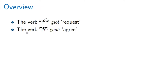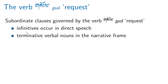We're interested in these two verbs: to request and to agree. These are both verba dicendi, and we're going to look at their syntax. The first half is about request, and the second half is about agree. So: subordinate clauses governed by the verb sol, meaning request.